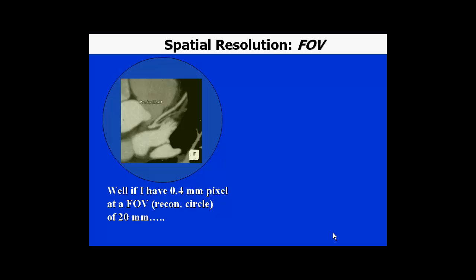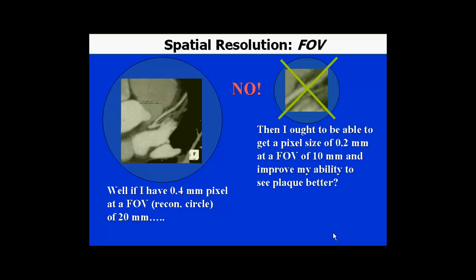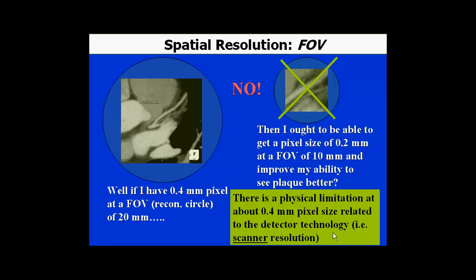Many people ask whether reducing the field of view further — say to 10 millimeters — could yield pixel sizes as low as 0.2 millimeters, improving visualization of the coronary artery and plaque. However, this is not possible because in multidetector CT there is a physical limitation on the lowest slice collimator setting, which is related to the resolution of the actual detector array. In general, the physical limitation is approximately 0.4 millimeters pixel size.